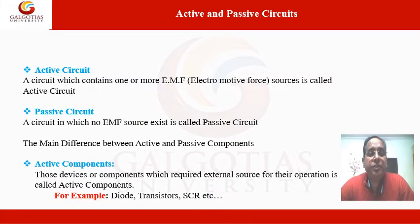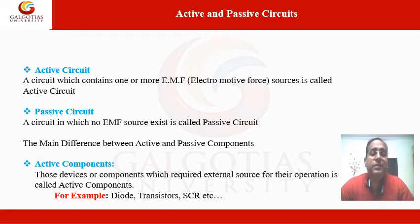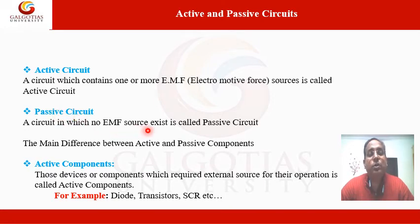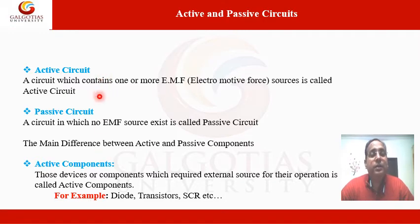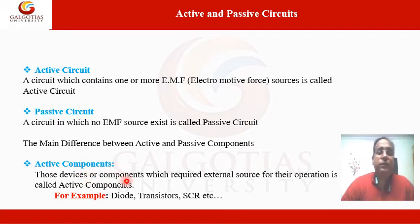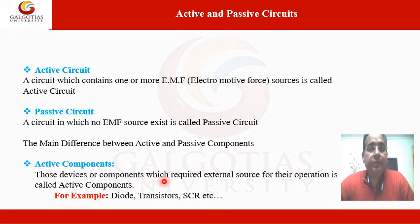Next is the differentiation between active and passive circuits. Active and passive circuits depend on whether the circuit has an electromotive force (EMF). Any circuit having electromotive force is called an active circuit, and any circuit not having any EMF source is called a passive circuit. Active components are those which require an external source for their operation, such as diodes and transistors.